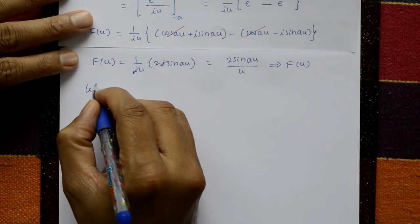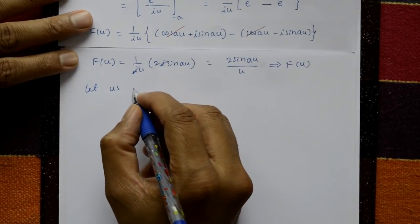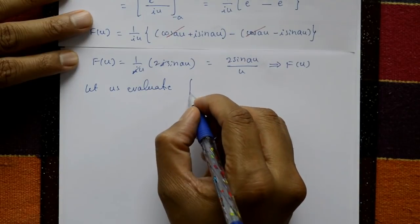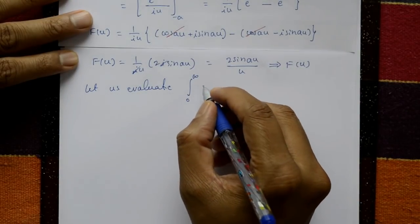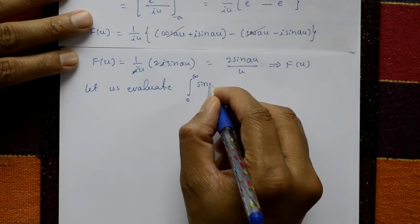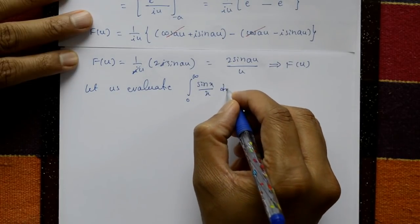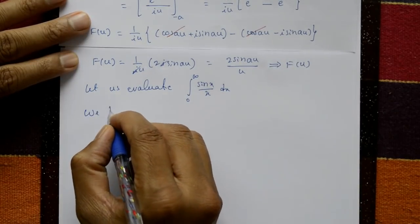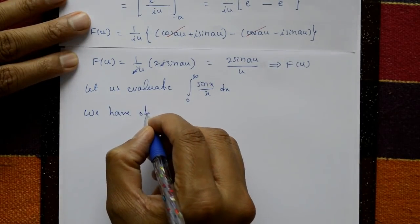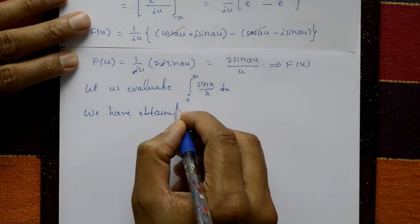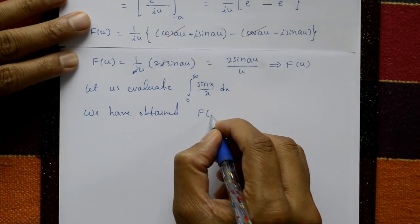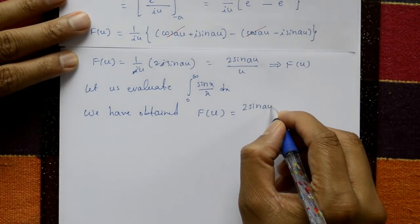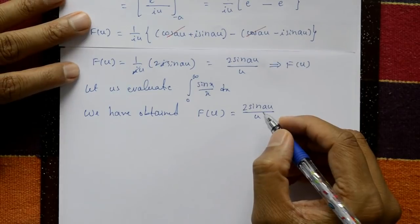Now let us evaluate the integration from 0 to infinity of sin(x)/x with respect to x. We have already obtained f̂(u) equals 2·sin(a·u) divided by u.